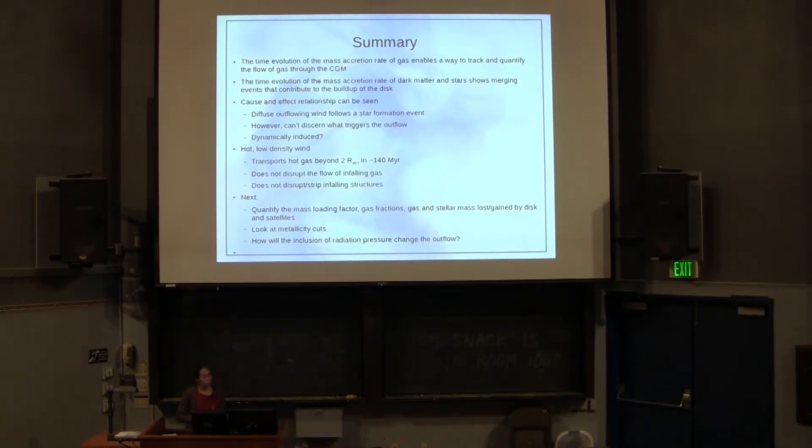Like I said, this is still a work in progress. What this method tells us is that if we look at the time evolution of the mass accretion rate of the gas, it enables us to track and quantify the flow of gas through the CGM using an AMR code. And then if we look at the mass accretion rate of the dark matter and the stars, we can identify those satellites and track them as they're coming in. We see a cause and effect relationship where we saw something hit the disk and then there was an outflow. However, we can't really discern exactly what triggered that outflow. We just know an outflow happened in that cylindrical region.